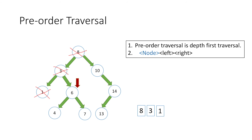So we move right to node 6, and since we are at a node we print its value — 6 — and strike it off as traversed. Now we move left to the node containing value 4. Looking at the rule we print its value — 4 — and strike it off. We can't move left as it has no left child, and we can't move right as it has no right child. So we move a node up and reach node 6. We have already traversed it and its left, so now we go to its right child — node 7.